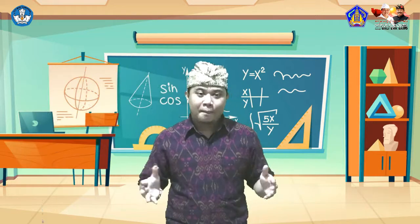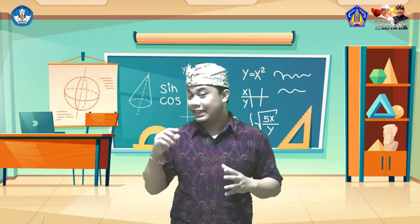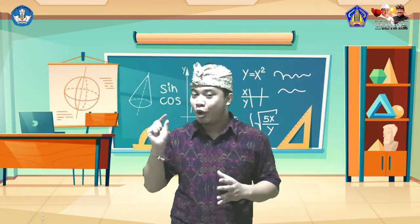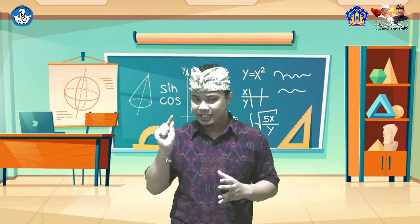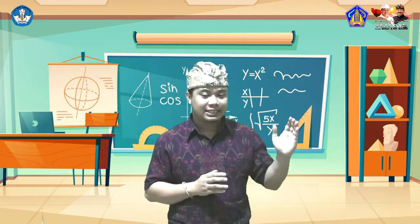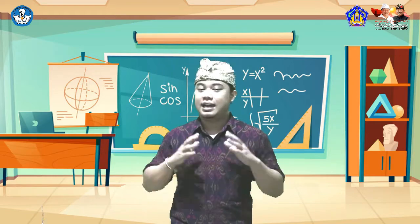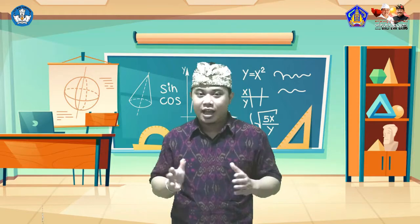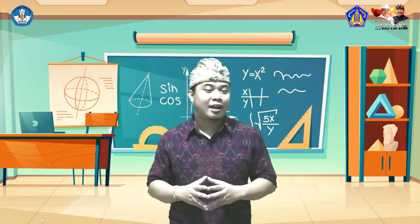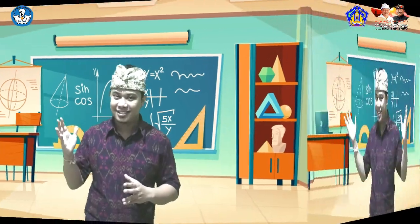Setelah kita temukan bayangan dari ketiga titik sudut pola segitiga ini, yaitu A aksen, B aksen, dan C aksen, ayo kita gambarkan bayangannya di koordinat Cartesius.